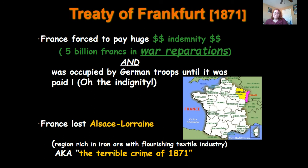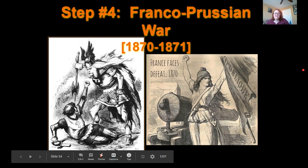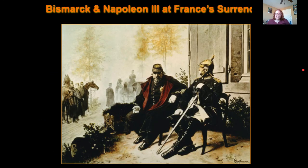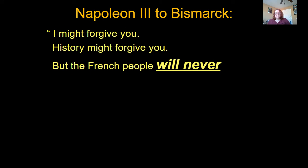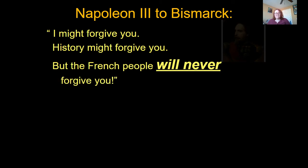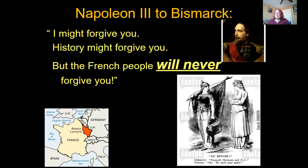Not only that, but France was also forced to give up the Alsace-Lorraine region — the territory in northern France that separates Germany and France, through which the Rhine River runs. This was so important because the region was rich in iron ore and had a flourishing textile industry. The Germans basically forced France to pick a fight — like Germany was over there poking France, 'I'm not touching you,' and then France ended up getting mad and losing a lot. Losing Alsace-Lorraine would actually be nicknamed 'the terrible crime of 1871.'